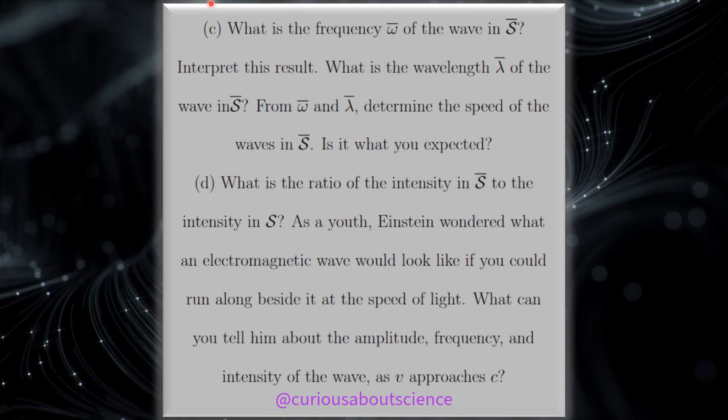Almost there, okay. And then for part C, what is the frequency omega bar of the wave in S bar? Interpret this result. What is the wavelength lambda bar of the wave in S bar? From omega bar and lambda bar, determine the speed of the waves in S bar. Is this what we expected?